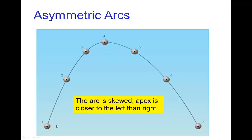The other most common error in arcs is to have the apex not in the center of the arc. So in this case, the two sides of the arc are parabolic, but they don't match each other. So the left side doesn't match the right side, and so we have the apex not in the center.